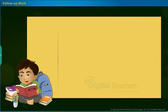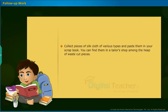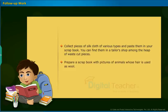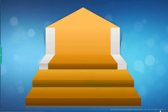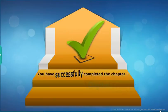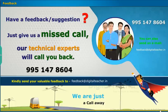For follow-up work, collect pieces of silk cloth of various types and paste them in your scrapbook — you can find them in a tailor shop among waste cut pieces. Also prepare a scrapbook with pictures of animals whose hair is used as wool. You have successfully completed the chapter 'Fiber to Fabric.'